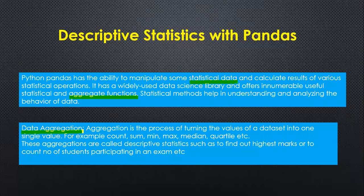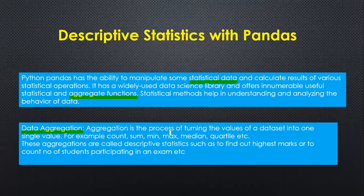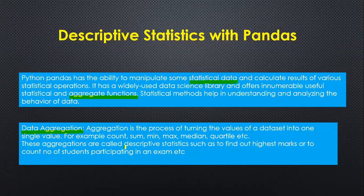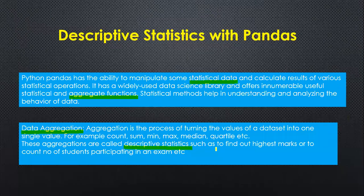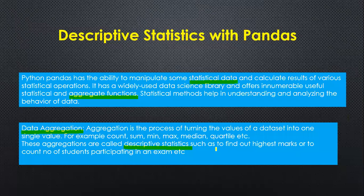Statistical methods help in understanding and analyzing the behavior of data. We have a term here called data aggregation. Aggregation is the process of turning the values of a dataset into one single value — for example, count, sum, min, max, median, quartile etc. These aggregations are also known as descriptive statistics, such as finding the highest marks or counting the number of students participating in an exam.